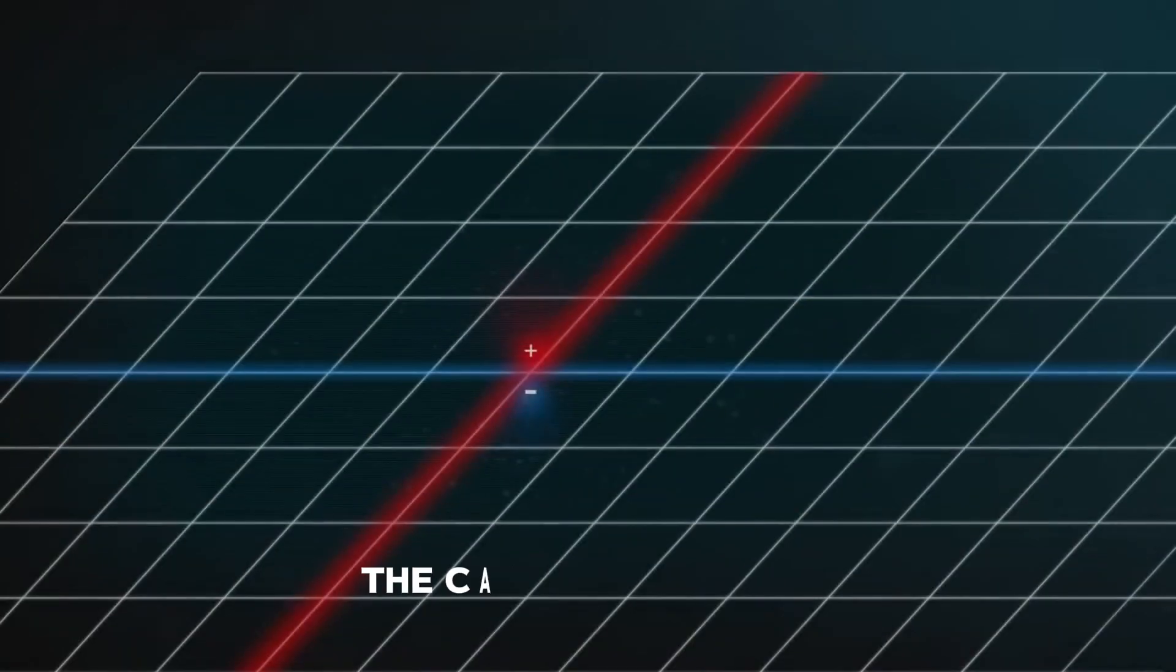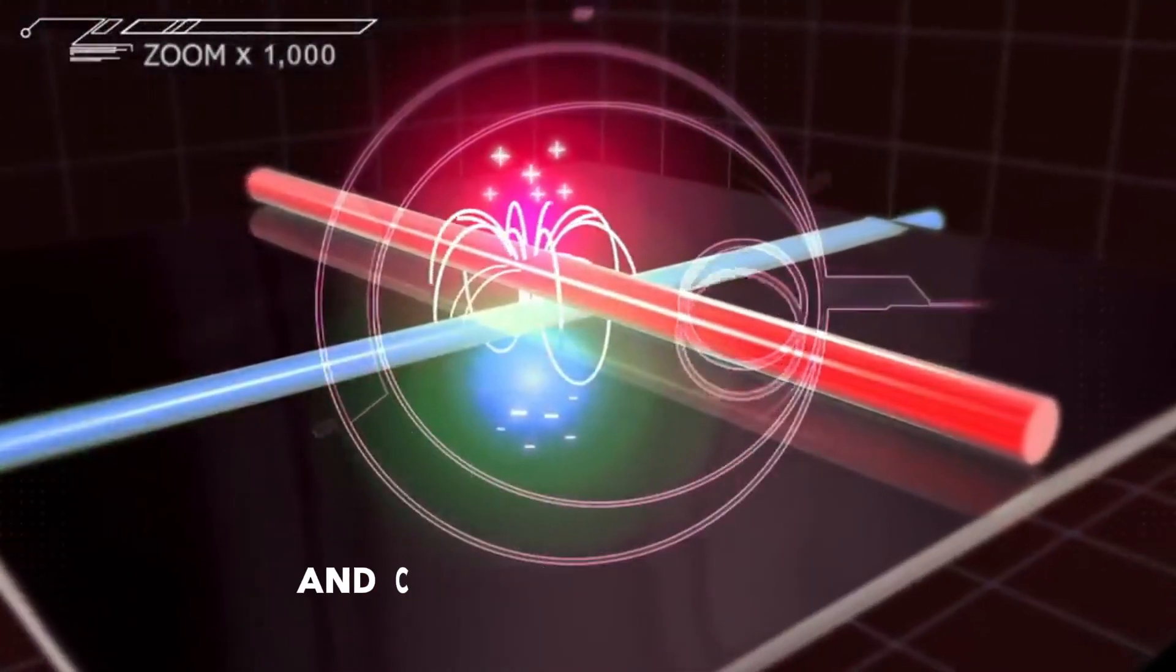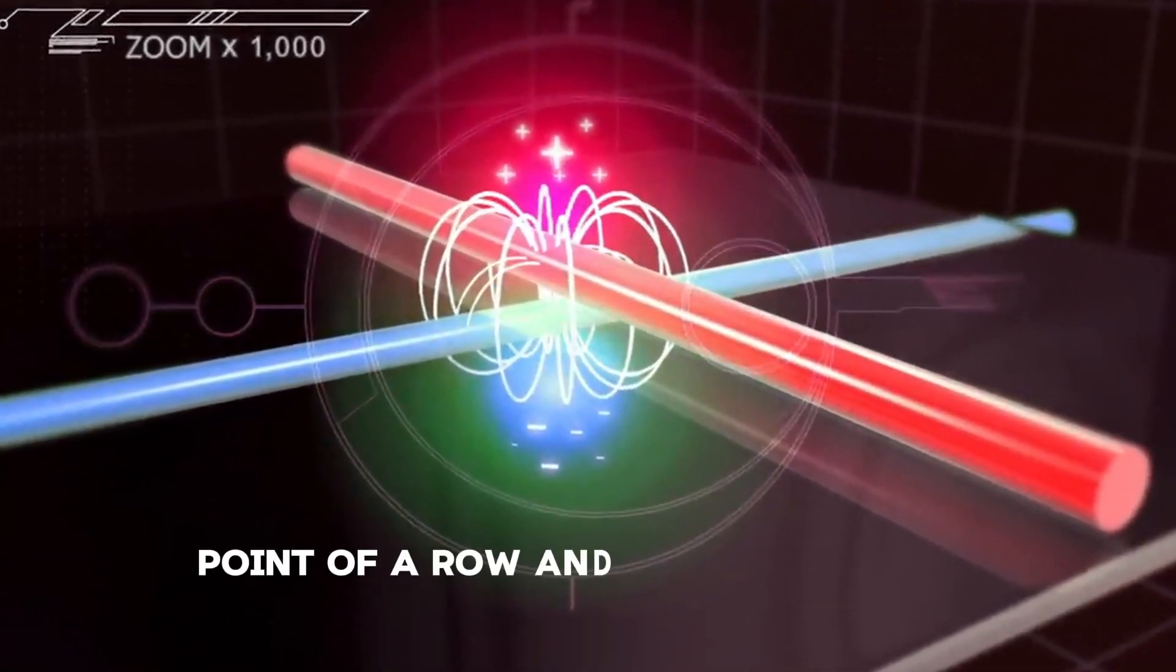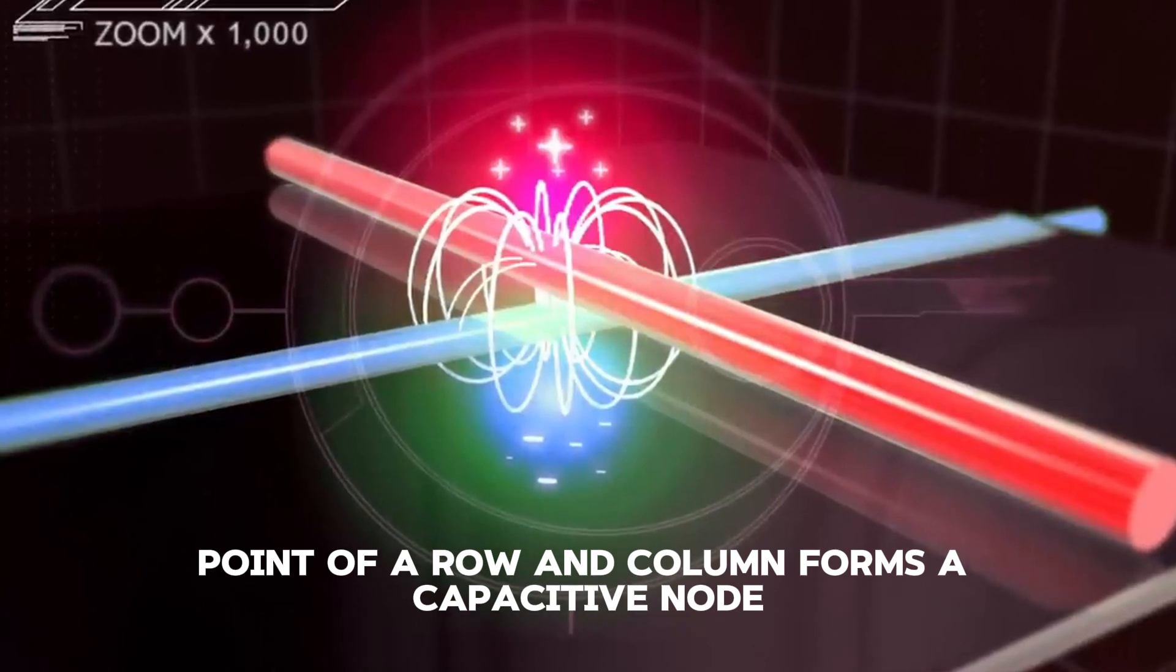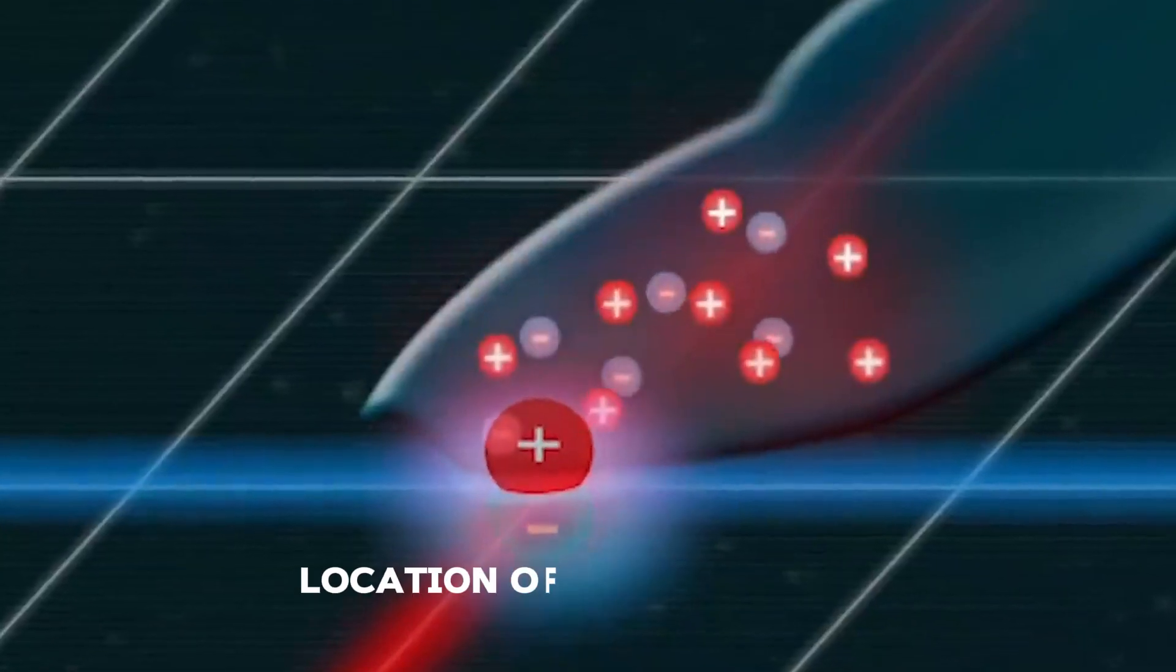Electrode grid. The capacitive layer is structured in a grid pattern with rows and columns of electrodes. Each intersection point of a row and column forms a capacitive node. The grid system helps in determining the precise location of a touch event.